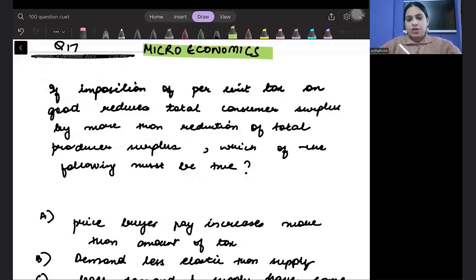Let's read the question Bitta. If imposition of per unit tax on code reduces consumer surplus by more than reduction in total producer surplus.